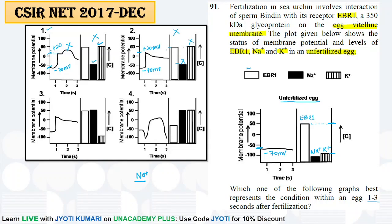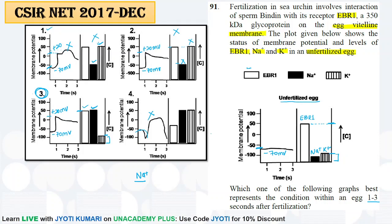Third graph में: minus 70 से plus 20 millivolt — correct। EBR1 का concentration as it is रहेगा — unfertilized की तरह — correct। Sodium का concentration बहुत बढ़ा है जो होना भी चाहिए क्योंकि fast block में sodium की entry egg के अंदर होती है। Potassium में कोई change नहीं — as it is। इसलिए third statement correct है। Fourth graph में membrane potential minus 60 के करीब दिख रहा है और EBR1 fluctuate हो गया — wrong। Answer: third graph।